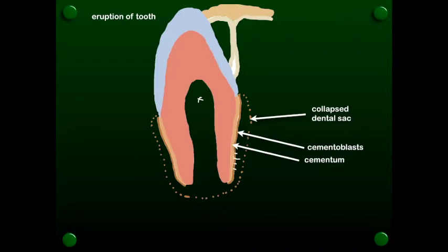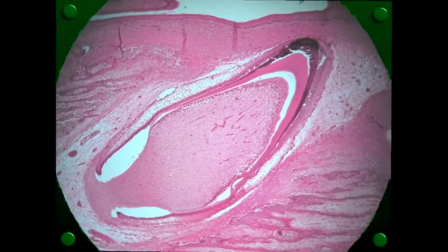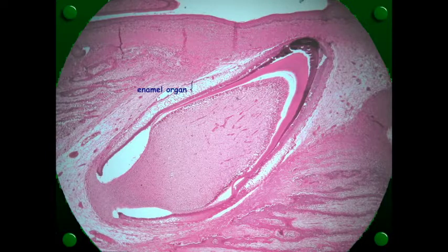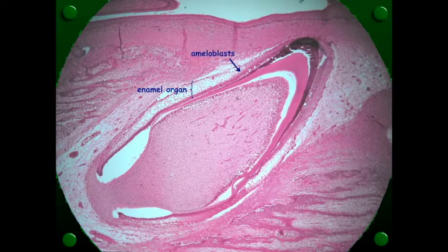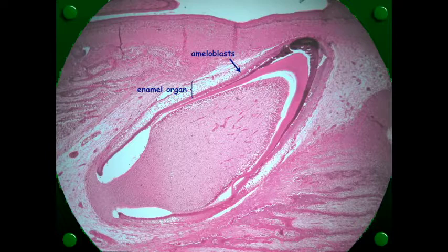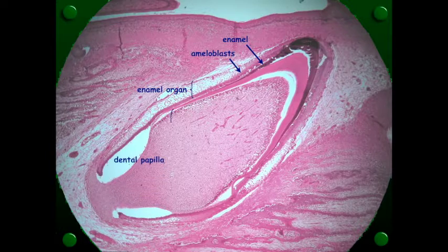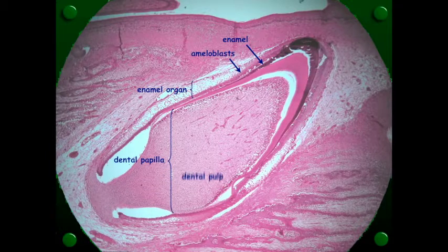So let's look at this histologically here. Here we can see the enamel organ. And that inner enamel epithelium has differentiated into ameloblasts and it is laying down the enamel. And here we have what's known as the dental papilla, which is basically the dental pole.